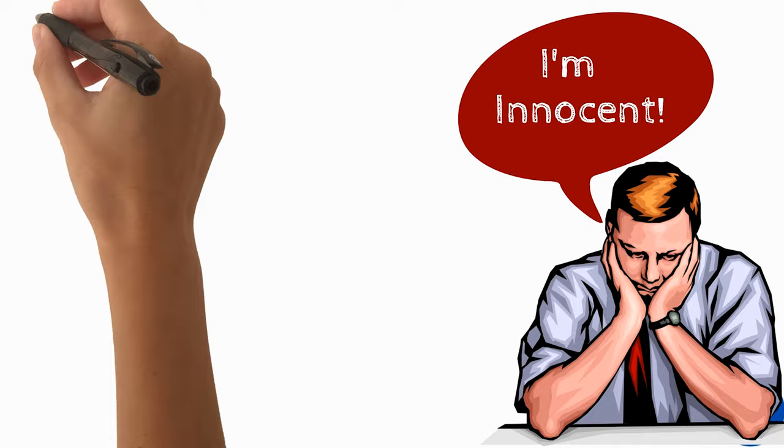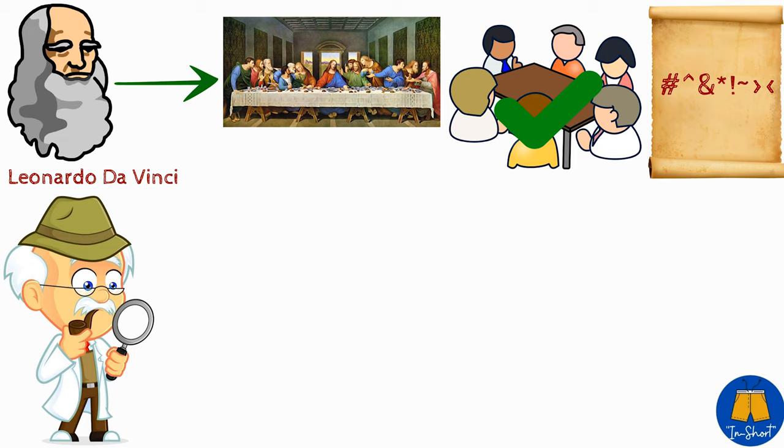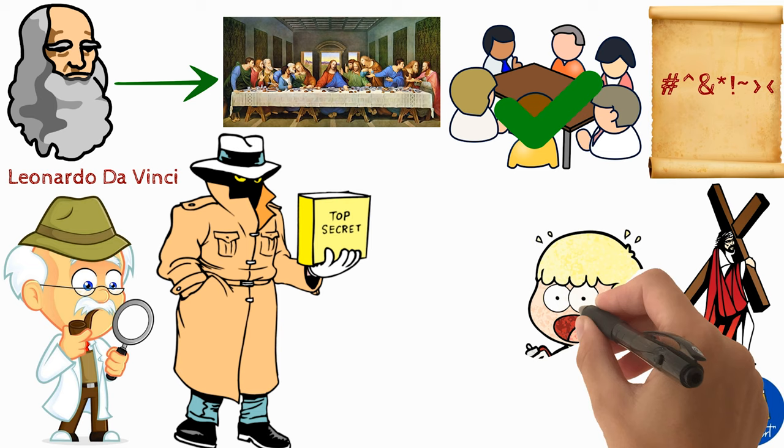Following some cryptic clues found in Leonardo Da Vinci's paintings, Langdon discovers that an ancient secret organization still exists and closely guards a shocking secret dating back to the time of Christ, a discovery which could shake the foundations of Christianity.